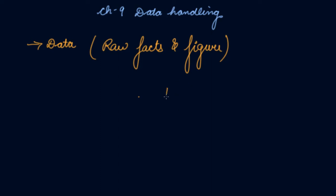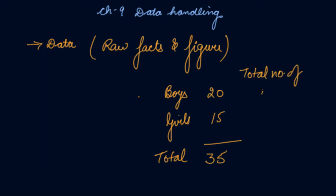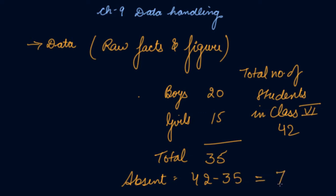And then when you say let's say the boys are 20, girls are 15, and the total number of students present are 35. And total number of students in Class 6 is let's say 42. So how many students are absent? 42 are the total, 35 are present, so 42 minus 35 is 7. Seven students are absent.